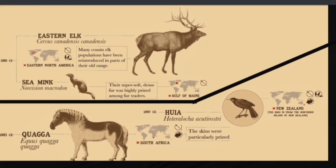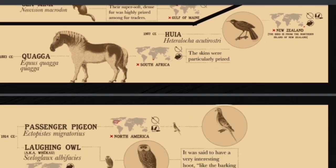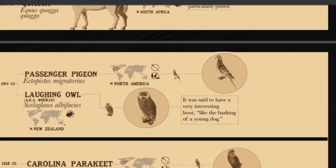In the 1880s, the Eastern elk and the sea mink went extinct. The Eastern elk was a relative of elk populations that have been reintroduced in some parts of their old range. The sea mink's super-soft, dense fur was highly prized among fur traders. In 1883, the quagga went extinct — its skins were particularly prized. In 1907, the huia went extinct due to over-hunting, destruction of its habitat, and invasive species.